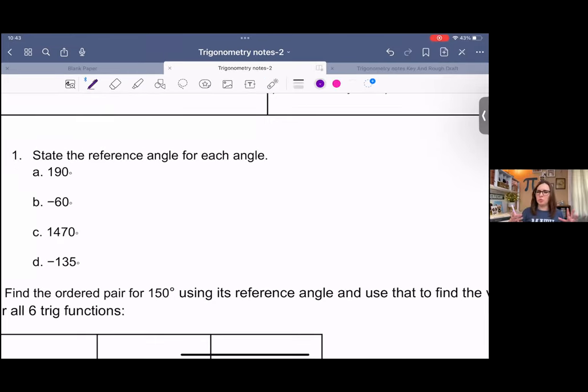190 is kind of a weird one, but if we were to subtract 180, we would get 10 degrees there for a reference angle. Negative 60 degrees is the clockwise version of 60 degrees. So you could just say 60 there, or you could add 180, or you could add 360. There's lots of different possibilities.